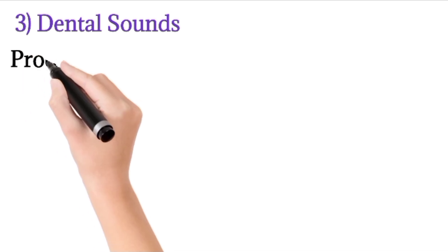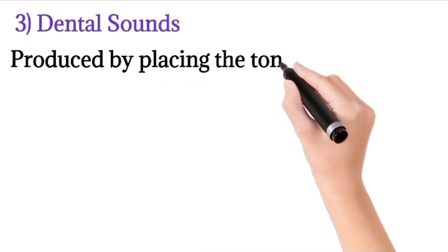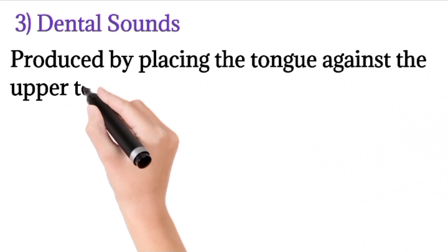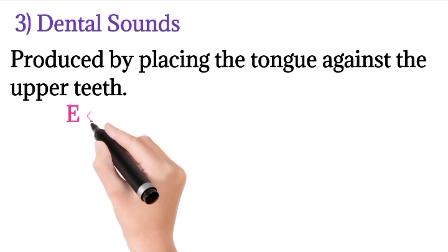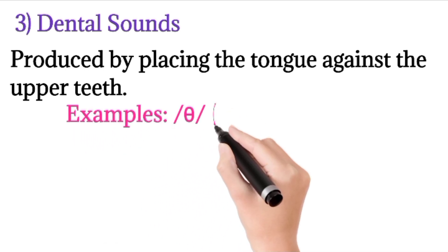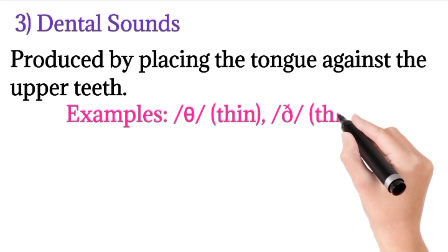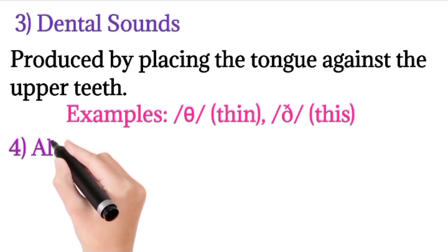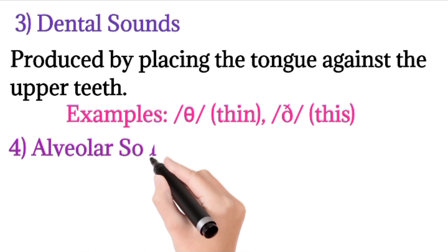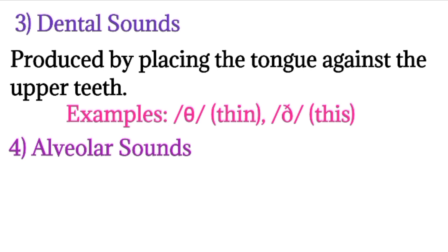The third type is dental sounds. 'Dental' means teeth, so teeth are involved in the production of these sounds. Dental sounds are produced by placing the tongue against the upper teeth. When the tongue tip touches the upper teeth, the sound is a dental sound. For example, the 'th' sounds — as in 'thin' and 'the' — are the two dental sounds in English.